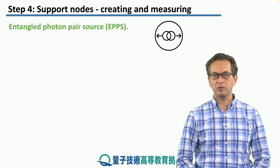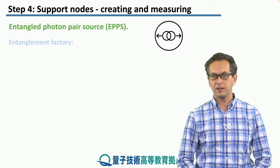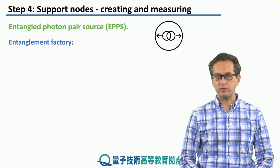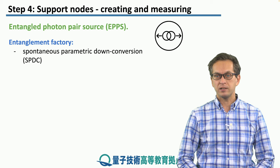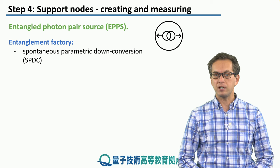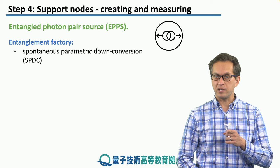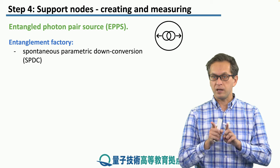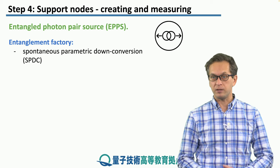The first node we're going to talk about is the Entangled Photon Pair Source, or EPPS. This node is responsible for creating entangled pairs of photons. It's like an entanglement factory. The process it relies on is called Spontaneous Parametric Downconversion, or SPDC, where a single photon from a laser is shone at a BBO crystal and produces two outgoing photons, which can be entangled.